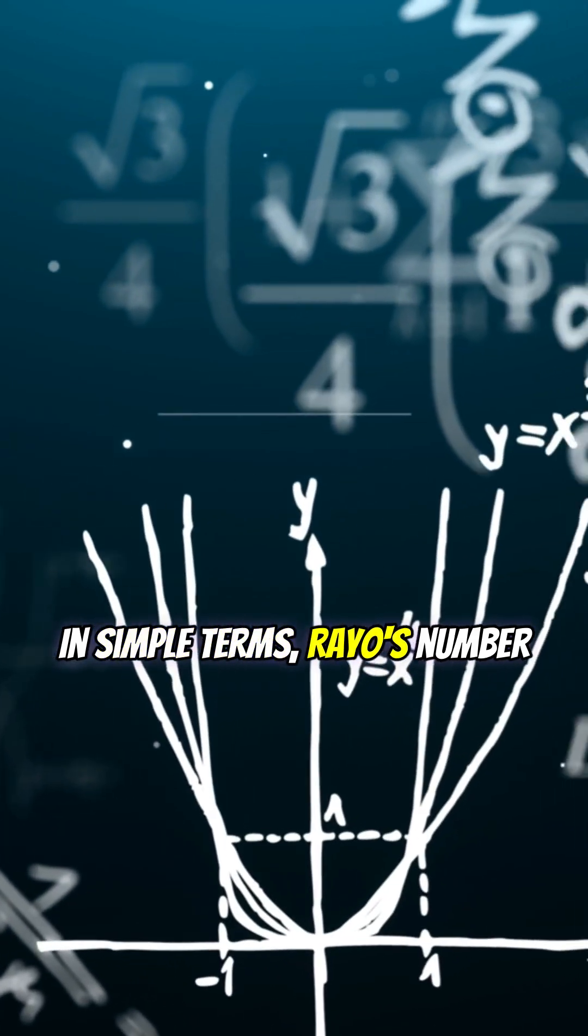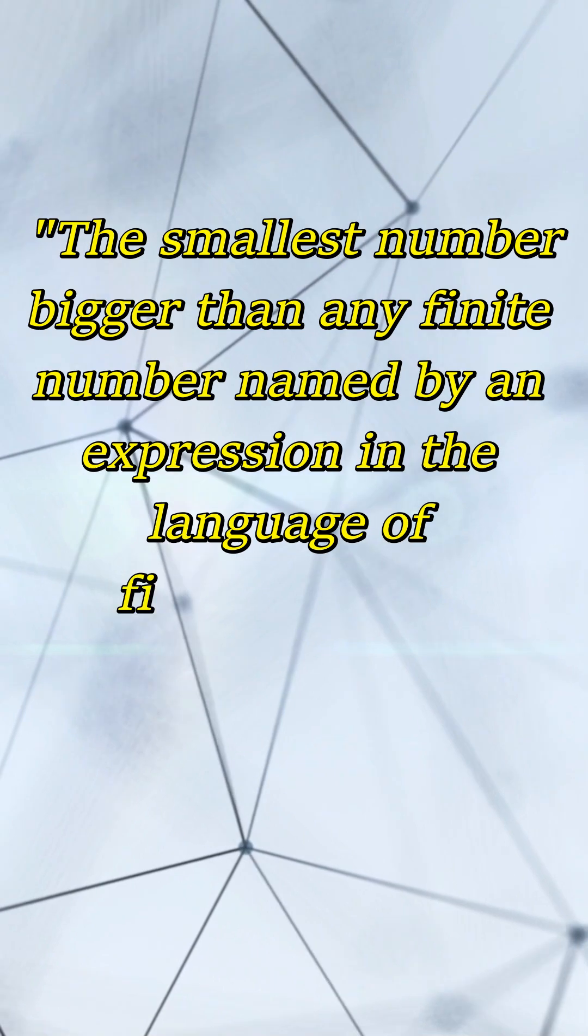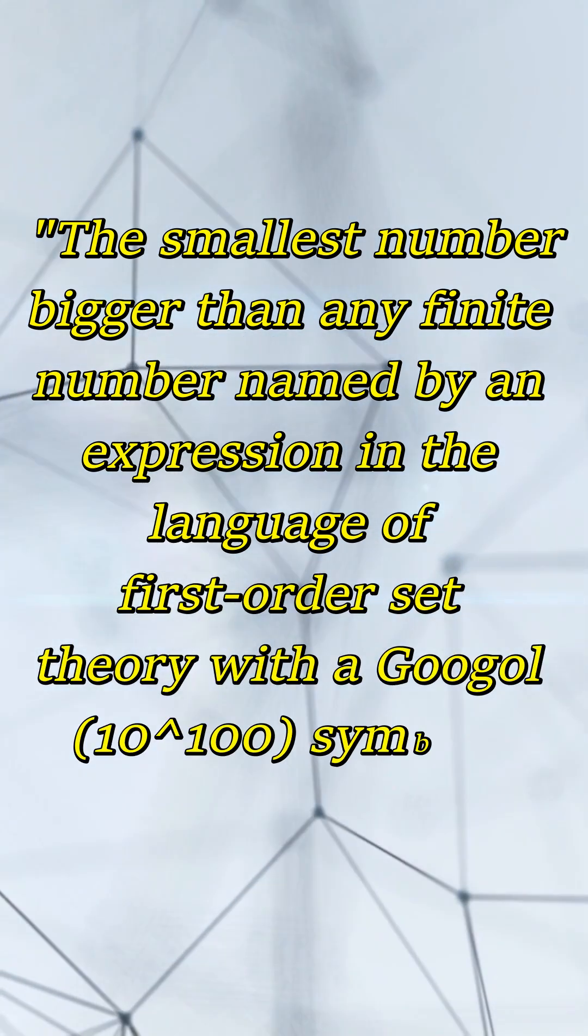In simple terms, Rayo's number is defined as the smallest number bigger than any finite number named by an expression in the language of first-order set theory with a googol symbols or less.